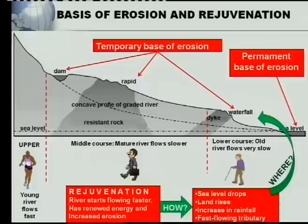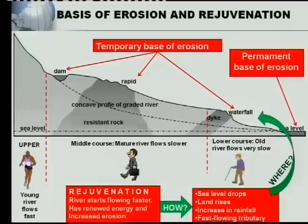A second cause of rejuvenation is the land rising. When the land rises on one side, a steeper gradient forms, the water starts flowing faster, erosion increases, and rejuvenation takes place — most notably at the nick point waterfall. There are two more causes: an increase in rainfall, which causes the river to flow faster; and a fast-flowing tributary joining the main river, which also leads to rejuvenation.